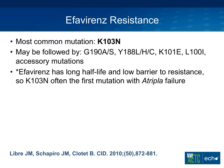K103N is the most common efavirenz resistance mutation and generally the first to develop. In the setting of virologic failure, if a person stays on efavirenz, they can develop additional accessory mutations. Efavirenz has a long half-life and a low barrier to resistance. So with imperfect adherence to Atripla, on days the dose is missed, efavirenz persists due to its long half-life — the patient is essentially getting efavirenz monotherapy, which is why K103N resistance develops first. This is also why, when stopping Atripla, we sometimes give an NRTI tail to avoid efavirenz monotherapy exposure.